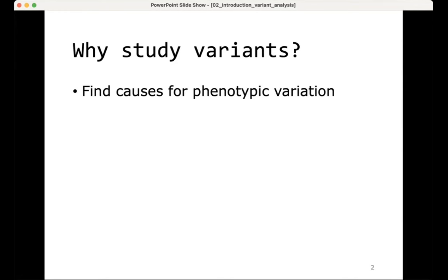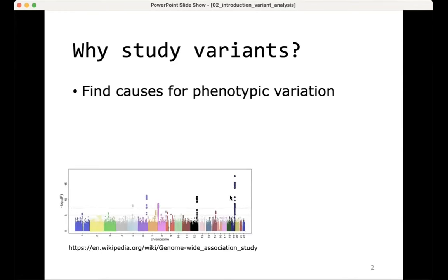So inherited phenotypic variation. One thing you can do is a genome-wide association study, where you measure phenotypes in a population and also do a variant analysis on the whole genome or whole exome of that species. Then you try to find associations between presence and absence of variants and the phenotypes — correlations between a variant and a phenotype — and if you have good genome coverage, you might actually find the causal variant.